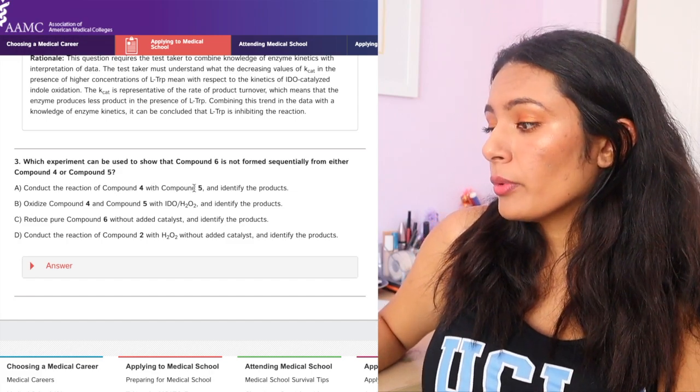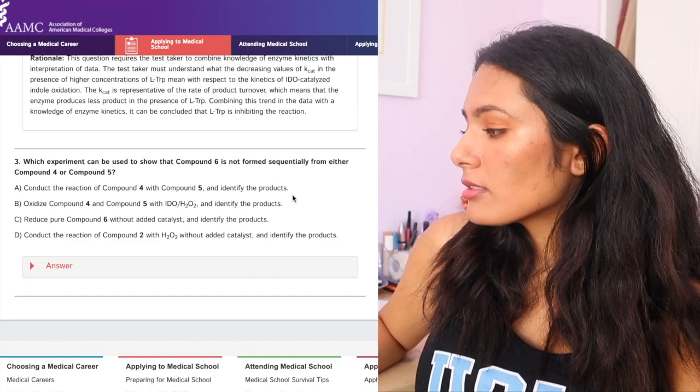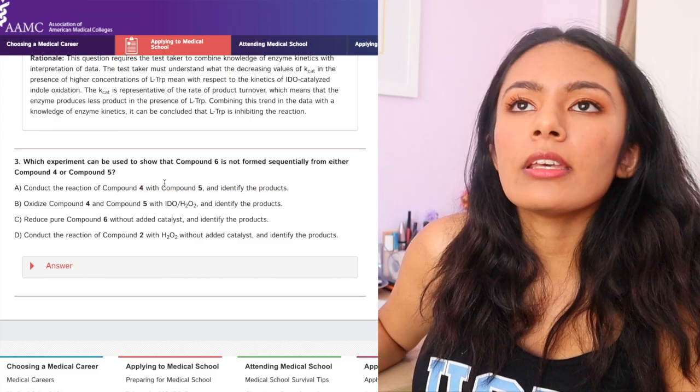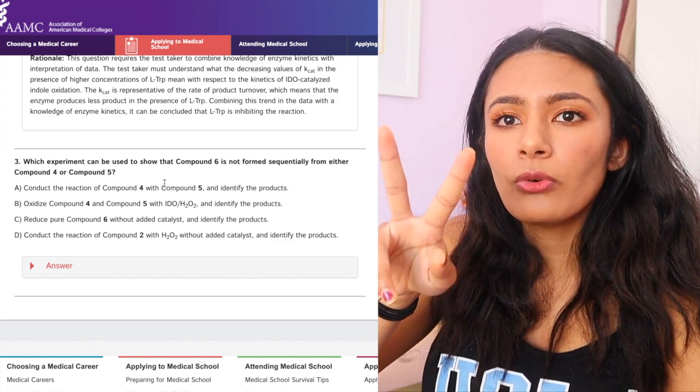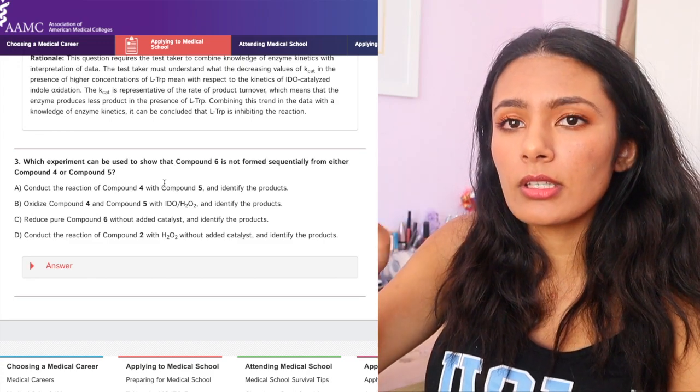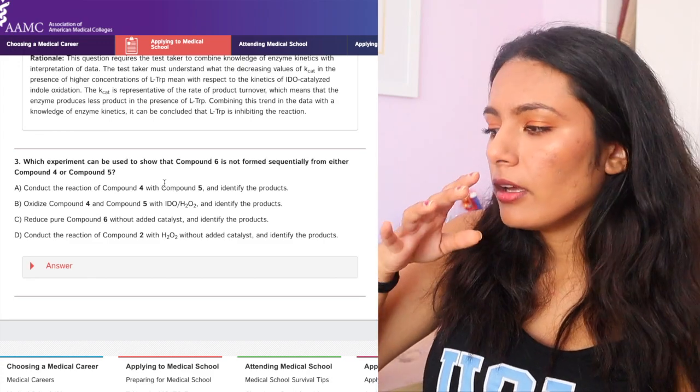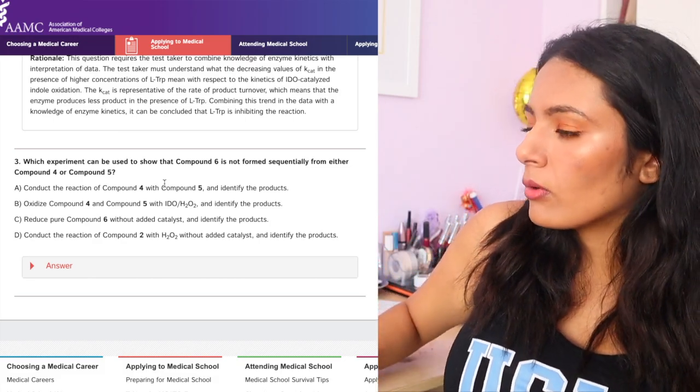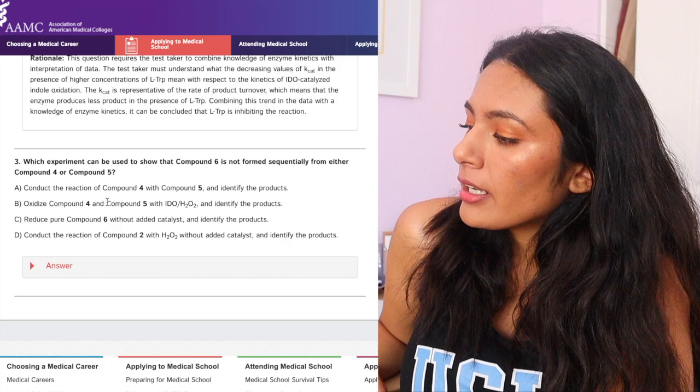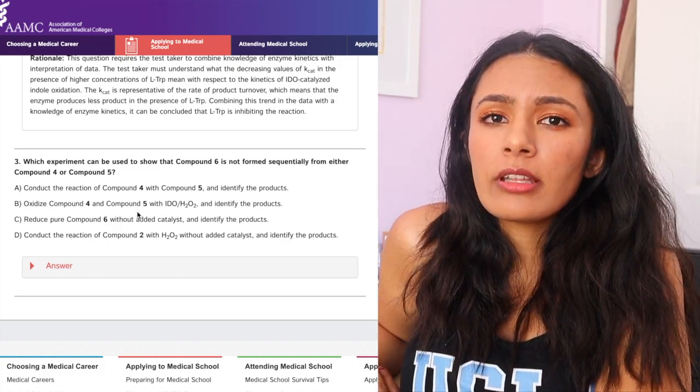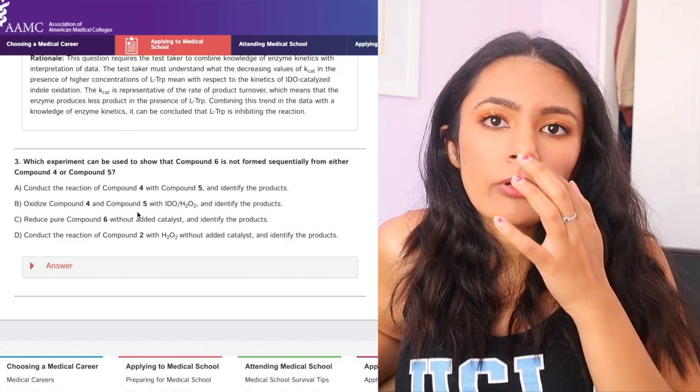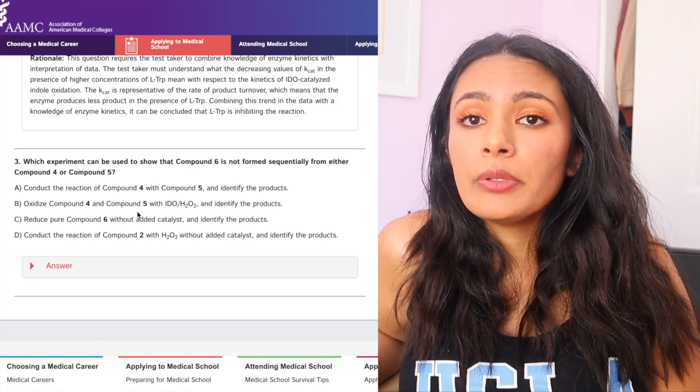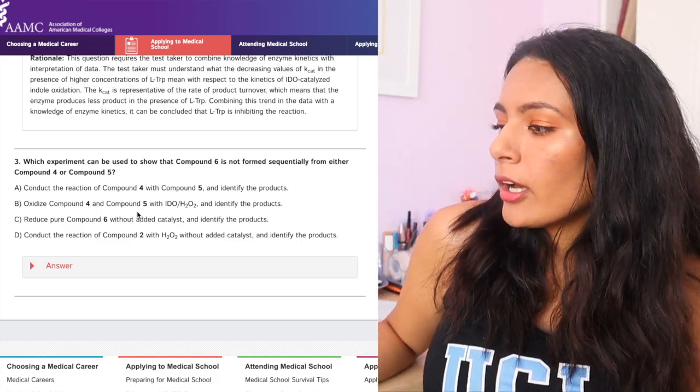And so let's see what the answer choices say. A says conduct the reaction of compound four with compound five and identify the products. So this is definitely an answer choice that I would be drawn to. But the thing is that this answer choice is asking if compound four and compound five react with each other to form compound six. And that's not really what the question stem is asking. It's more asking about compound six. Is it being created from compound four and the enzyme sequentially? B is saying, what if you oxidize compound four and compound five with IDO and identify the product? So that's more in line with what we were saying before. You drop in the IDO into compound four and compound five and see if compound six is formed from that. If it is, it's sequential. If it's not, then you probably would need compound three to create compound six. So right now B is looking at a good answer.